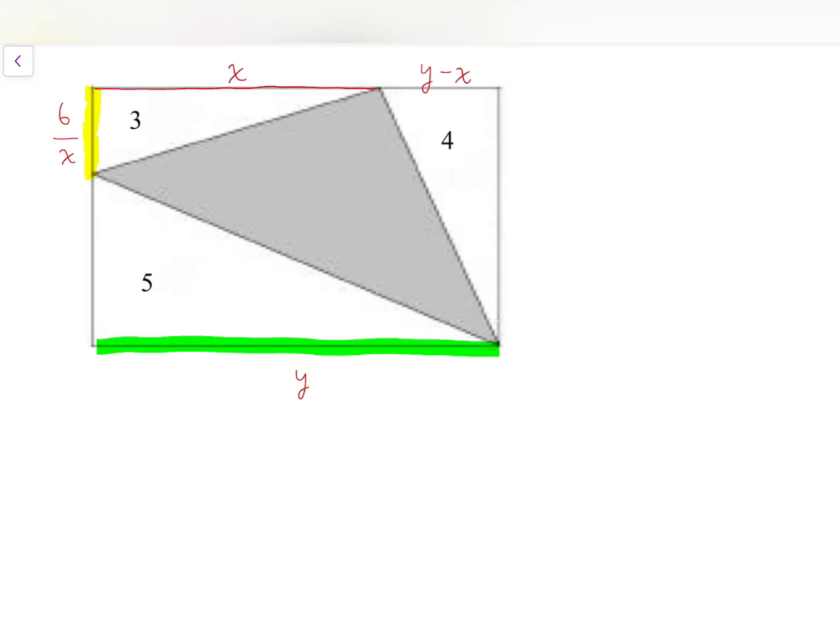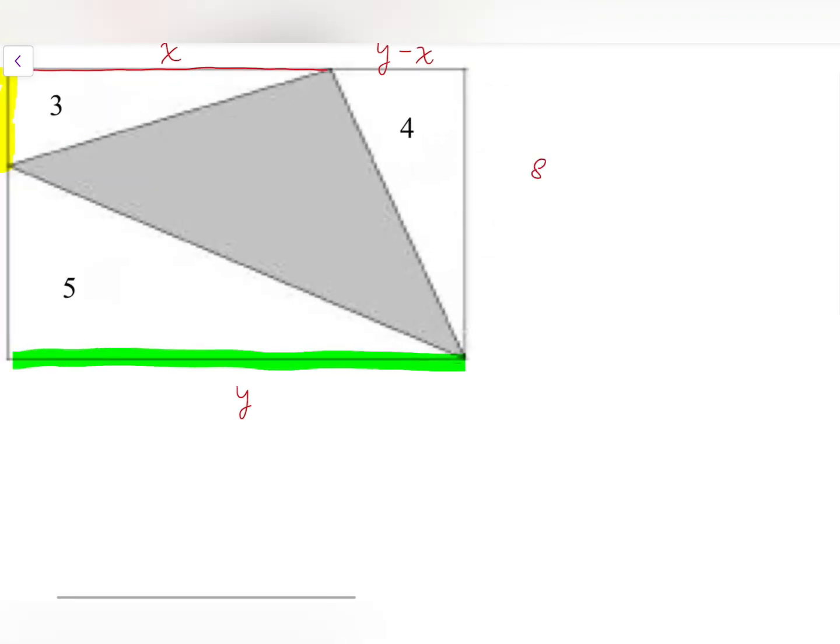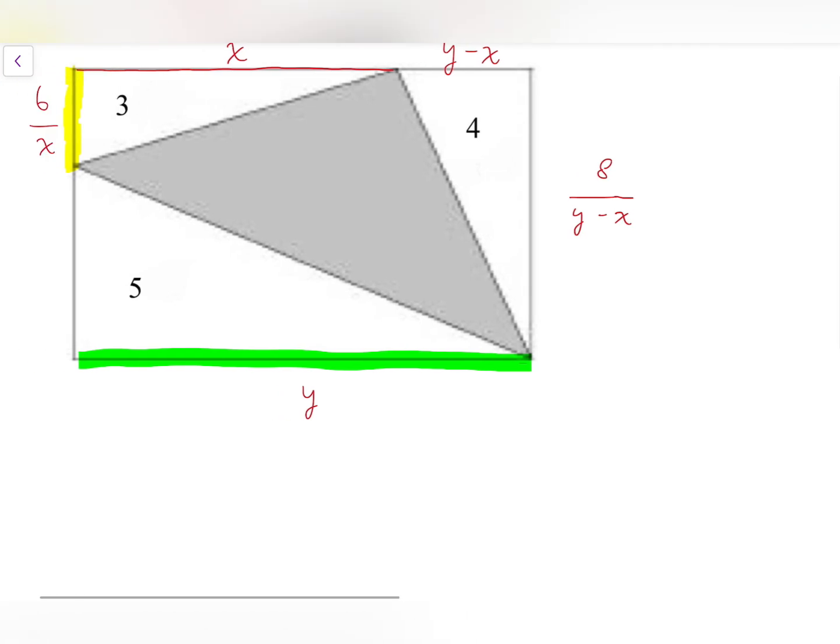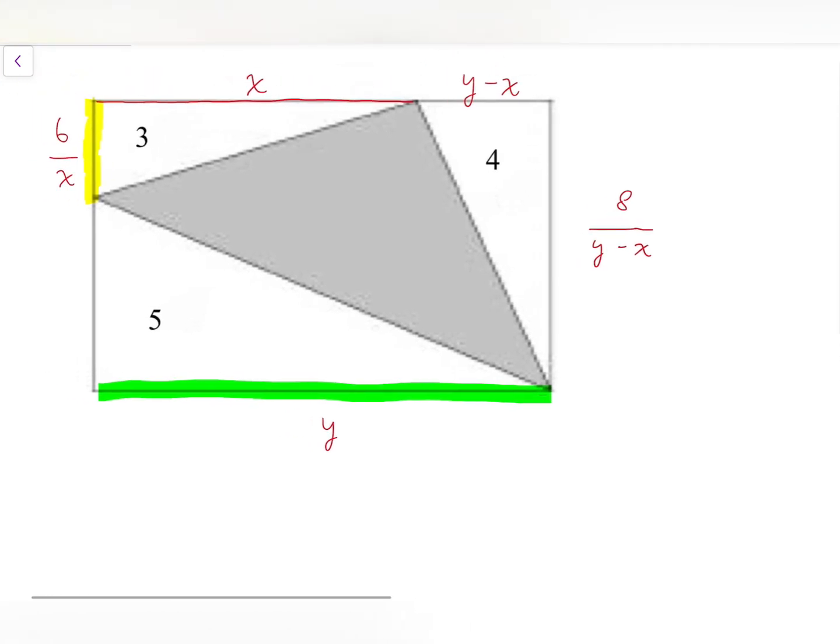And then using the same approach on areas, I can say the width is actually equal to 8 over y minus x by doubling the area and dividing by y minus x.